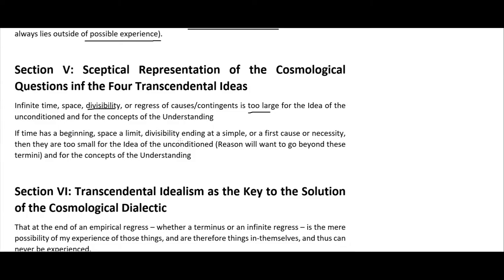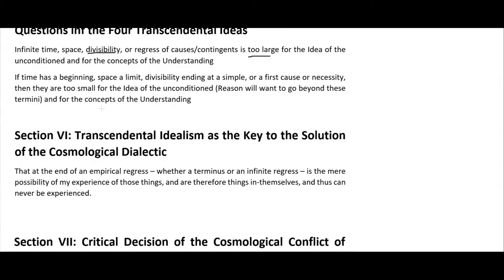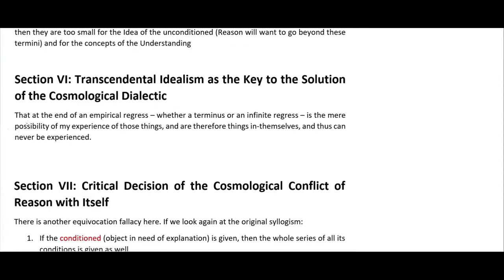Reason is always demanding some further explanation. In section 6, Kant says that at the end of an empirical regress, whether a terminus or an infinite regress is involved, these are mere possibilities of experience and can never actually be experienced. A necessary being is something we can't experience, but we also can never experience contingents as infinite, since we can't experience infinity.